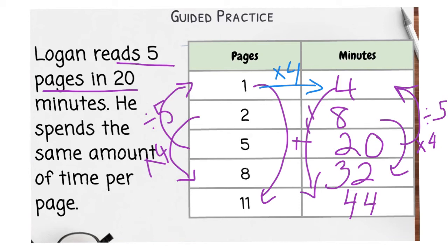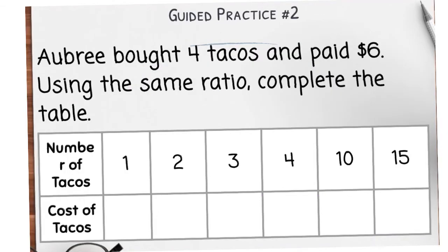Okay, let's look at another problem. Aubrey bought four tacos and paid $6. Using the same ratio, complete the table. So the original ratio is four tacos for $6. That would be the first thing that I put in my ratio table.